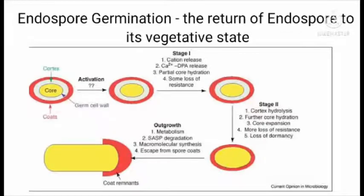Endospore germination is the return of the endospore to its vegetative state. It undergoes three processes: first is activation, second is germination, and last is outgrowth.